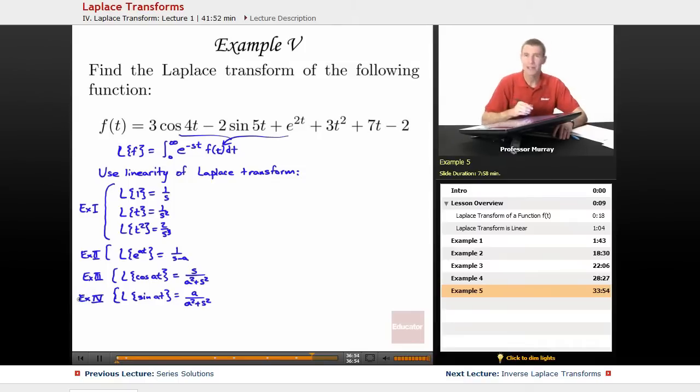So we're not really going to do any new math in this example. We're just going to exploit all the work we did in all the previous examples, and it should be pretty quick. So I'm going to look at this f of t. I see first of all 3 cosine of 4t.